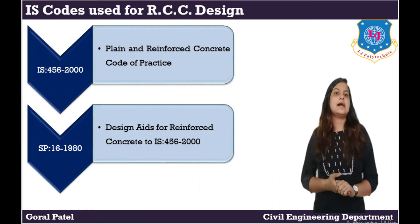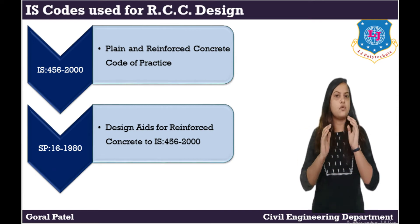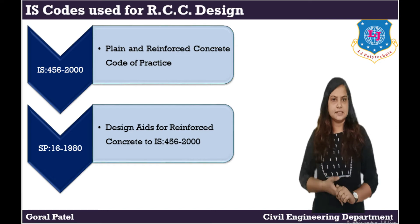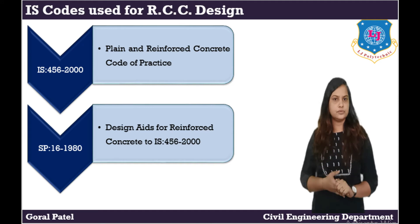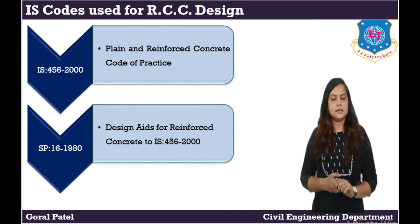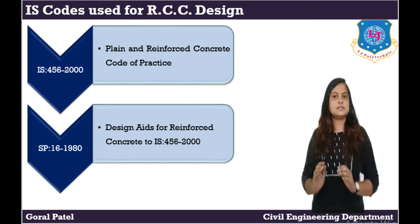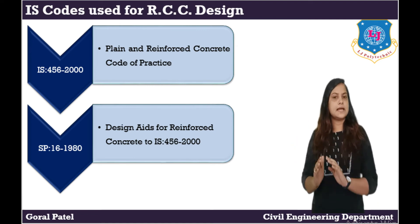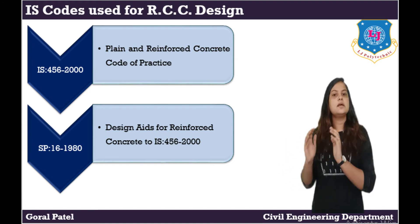Next is the IS codes used for RCC design. The Bureau of Indian Standards has made some provisions to ensure quality guidance, tolerance, quality control, quality assurance, and other basic details. There are two codes used in RCC design. The first is IS 456-2000, which is the Indian National Building Code. This code provides guidelines for the design and construction of structures and is periodically revised to align with current research and trends. IS 456-1978 is used for the working stress method, and IS 456-2000 is used for the limit state method.